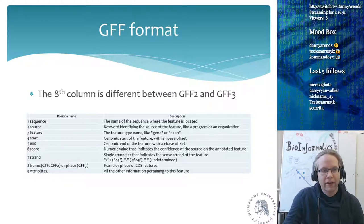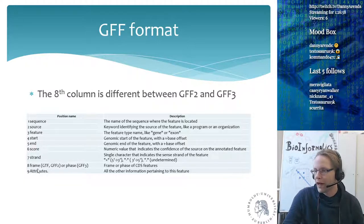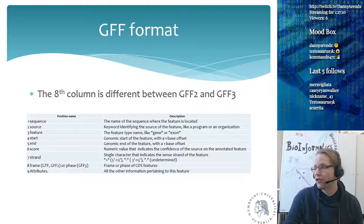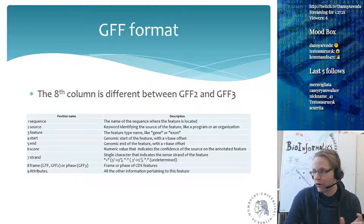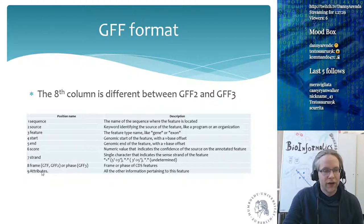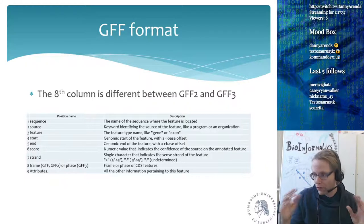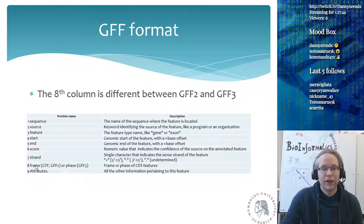Column 8 is where GFF2 and GFF3 differ: GFF2 calls it 'frame' and GFF3 calls it 'phase.' Both relate to the reading frame of amino acids — since every amino acid is coded by three base pairs, a base can be in frame (0) or out of frame (1 or 2), representing the shift relative to the amino acid codon. Column 9 is the attributes — all other information about the feature — essentially an open field where people can read and write whatever they want.